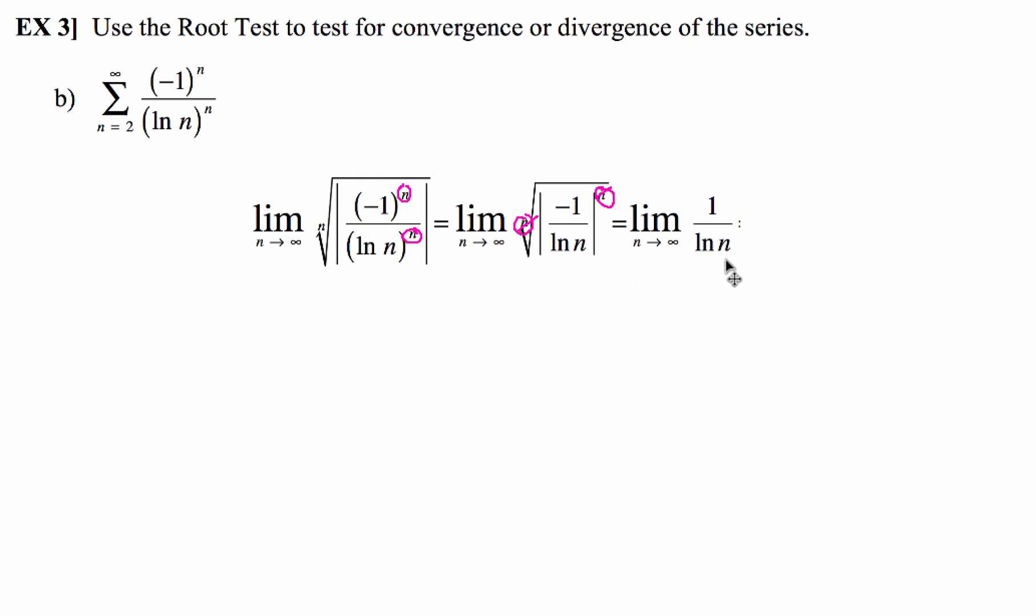Now natural log of n, when you put infinity in there, so this is going to get bigger and bigger and bigger as you do natural log of infinity when we make that substitution, and natural log of infinity is going to be some humongous number. So you're going to have 1 over some humongous number,